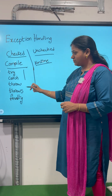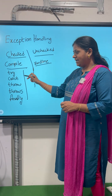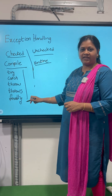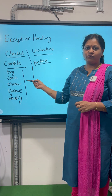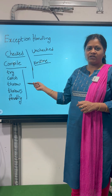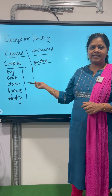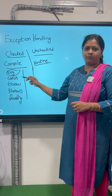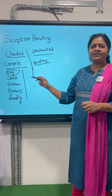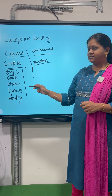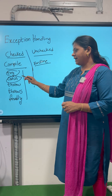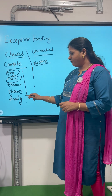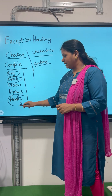How are we going to handle it? Using these blocks: try, catch, throw, throws, and finally. Whatever part of the code we have a doubt may raise an exception, that part of code we will keep in the try block. When the exception occurs, it will be caught in the catch block. We also have one more block called the finally block.